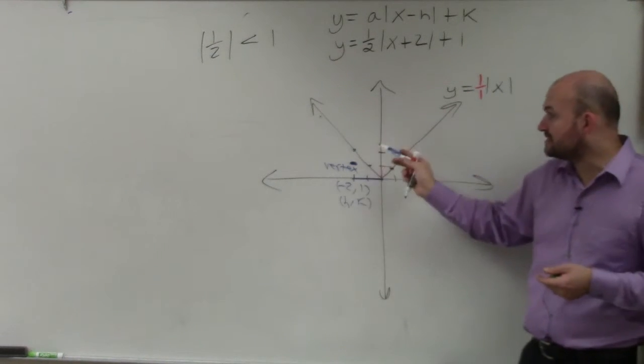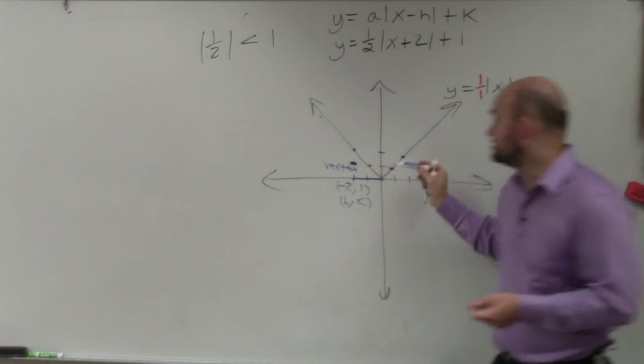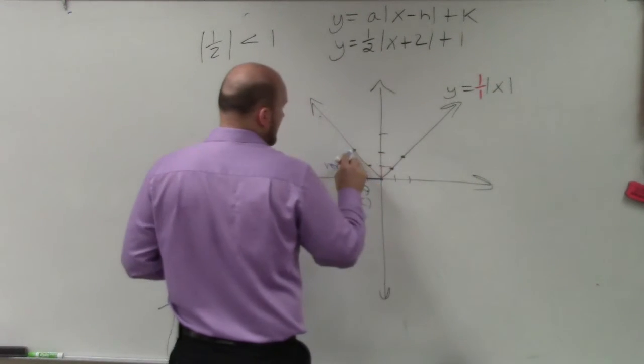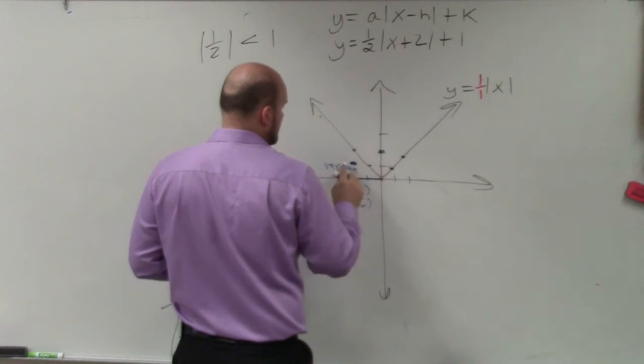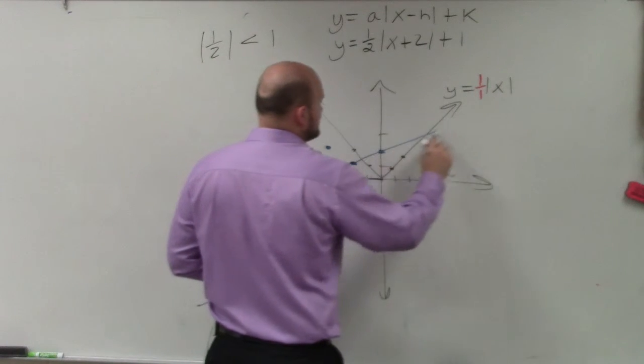So now, to graph our points, rather than going up 1 over 1 like the parent graph, now we're going to follow this slope, which is up 1 over 2. Up 1 over 2. And then I can just graph this.